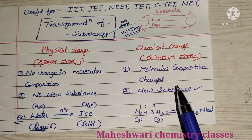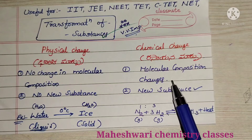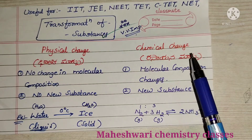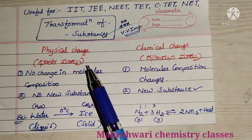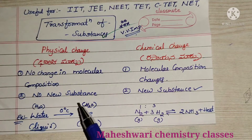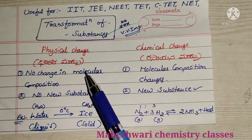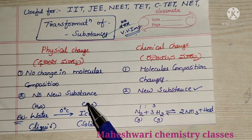Next, if molecular composition changes are involved, it will be a chemical change. For physical change, no new substances are formed — the molecular formula does not change. For chemical change, new chemical substances are formed.